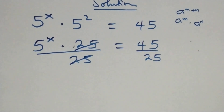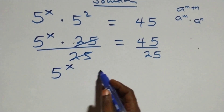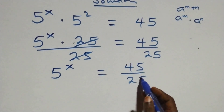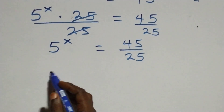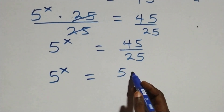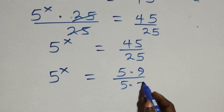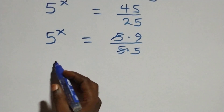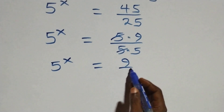The 25 cancels on the left side, leaving 5 raised to power x, which equals 45 over 25. We can write this as 5 raised to power x equals 5 times 9 over 5 times 5. The 5s cancel, and we are left with 5 raised to power x equals 9 over 5.